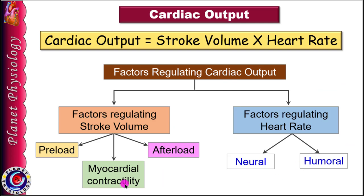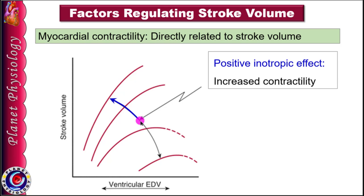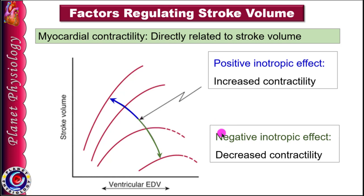The second factor determining stroke volume is myocardial contractility — the ability of ventricular muscles to contract at a given end-diastolic volume. More the contractility, more is the stroke volume. Factors which increase ventricular contractility shift the Starling's curve upwards and to the left and are said to exert positive inotropic effect. Factors which decrease contractility exert negative inotropic effect and shift the curve downwards and to the right.